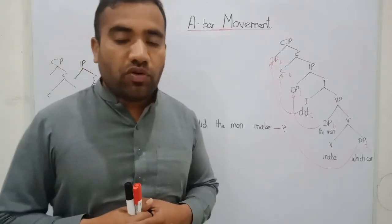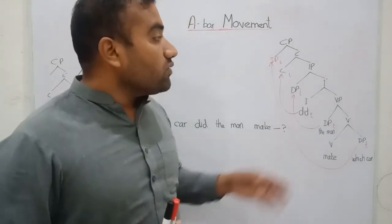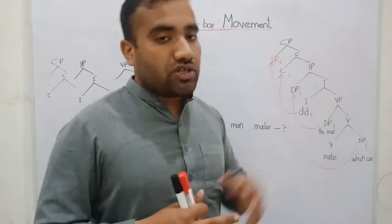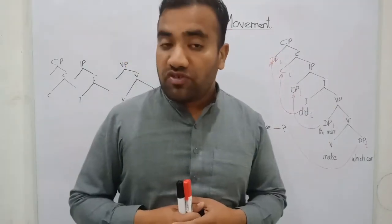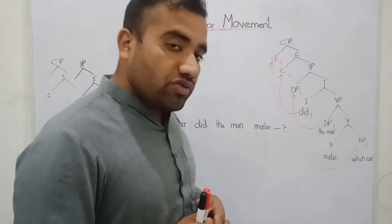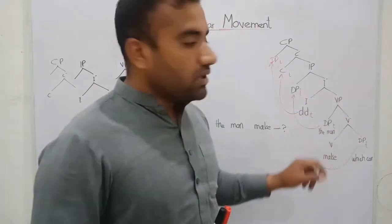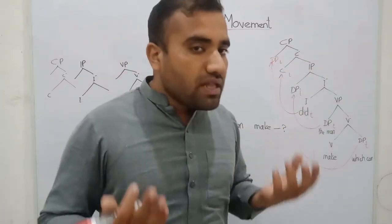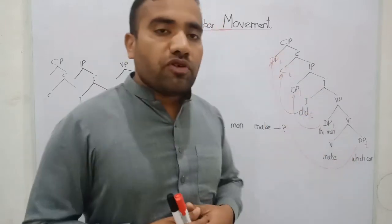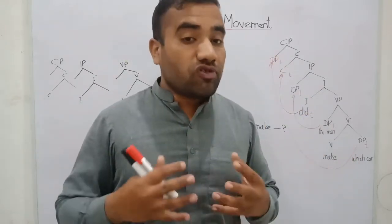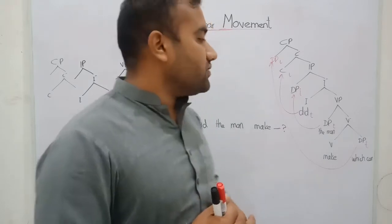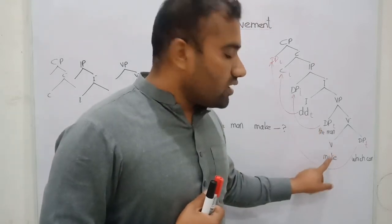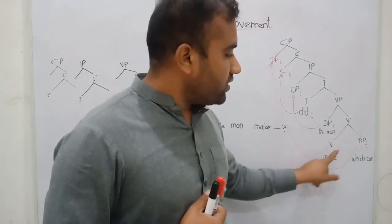First of all, we should know the structure of our sentence. This is the universal structure of the English language. The first layer is the VP layer, then the IP layer, and the last one is the CP layer. These three layers perform different functions when we construct sentences in natural languages.